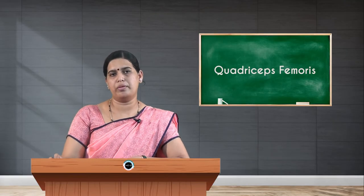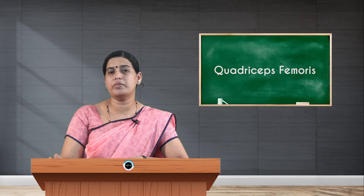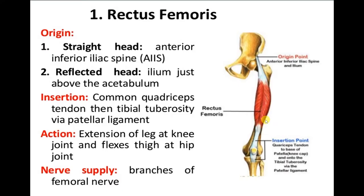The reflected head of rectus femoris takes its origin from the area above the acetabular margin of the hip bone. Both heads join together to form a common tendon, crossing the hip joint and entering the anterior compartment of the thigh. Rectus femoris is the best example of a bipinnate muscle. Towards the lower border of the femur it forms a tendon and, along with the tendons of the vasti muscles, is inserted to the base of the patella.